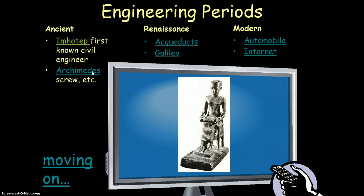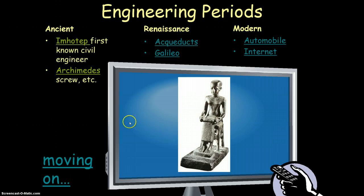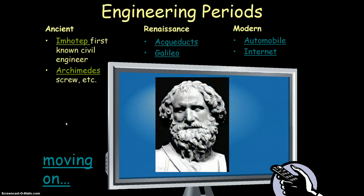Archimedes was part of the ancient Greek culture. He is arguably one of the greatest mathematicians, scientists, and engineers of all time. He invented the Archimedes screw, came up with the principle of buoyancy, and invented all kinds of siege machines and defense systems for people being attacked by the Romans during the siege of Syracuse. He was a historical figure who used his ingenuity to help defend his people.